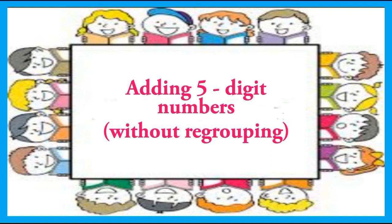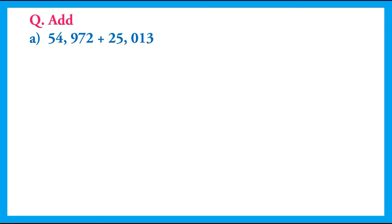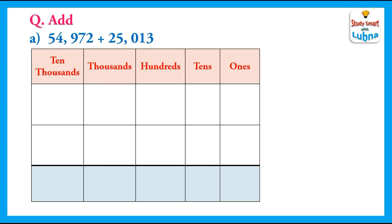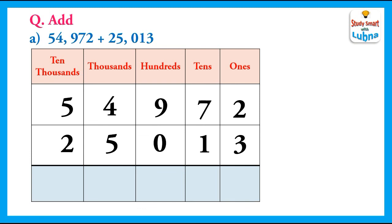Welcome students! Today we will learn adding five-digit numbers without regrouping. The five-digit numbers are 54,972 and 25,013. First, we will write these five-digit numbers below their place values. The place values are ones, tens, hundreds, thousands, and ten-thousands. We write the numbers according to their place values: 54,972 and 25,013.